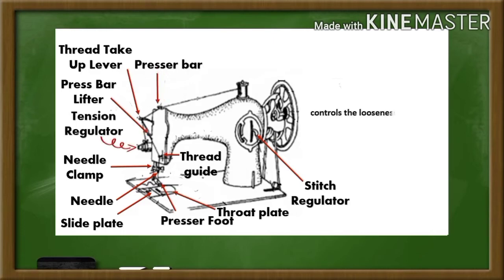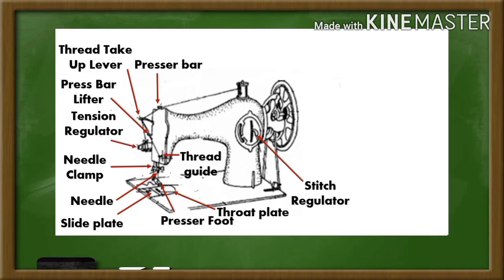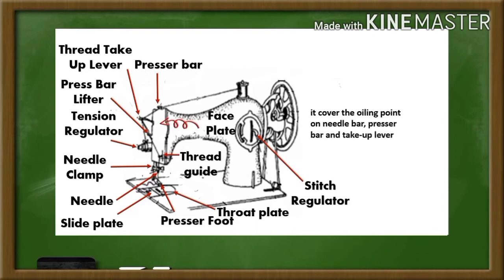Tension regulator. It controls the looseness and tightness of stitches. Face plate. It covers the oiling points on the needle bar, presser bar, and take-up lever.